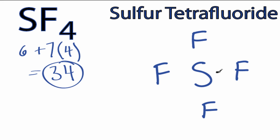Next, we put bonds between atoms, each bond, 2 valence electrons. Like so. And we've used 2, 4, 6, 8 valence electrons. Let's go around the outside. 10, 12, and 32.